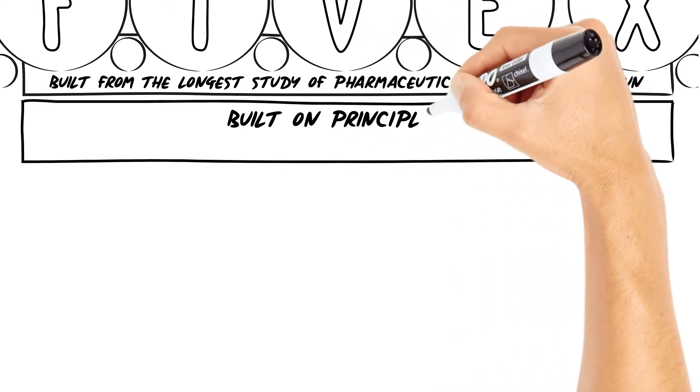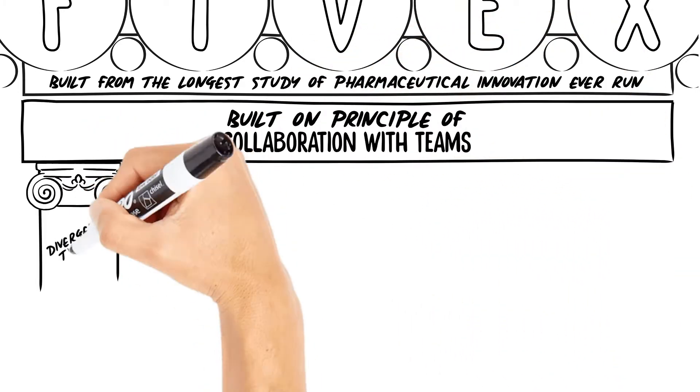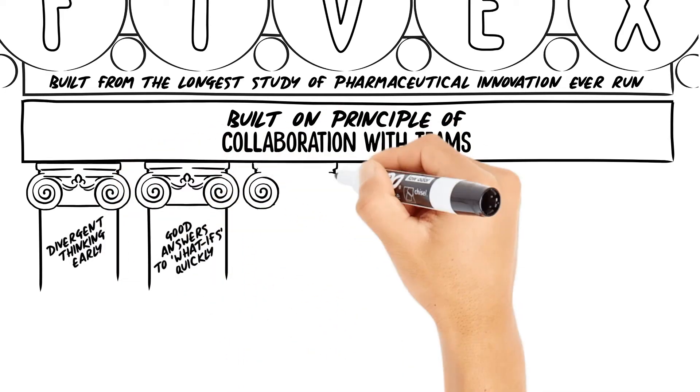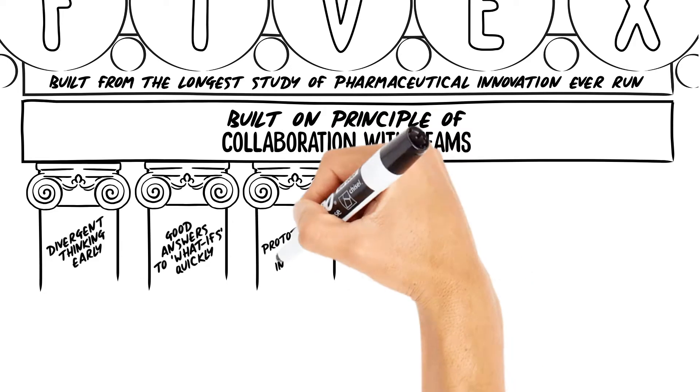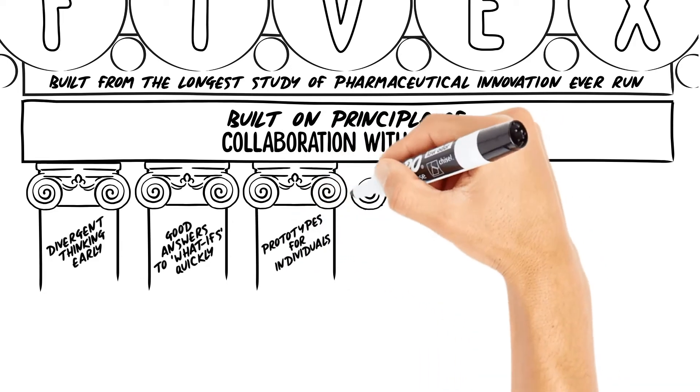5x is built on the principles of collaboration within teams which are divergent thinking early, good answers to what-ifs quickly instead of more detailed answers slowly, and prototypes that allow individuals to bring their own perspectives to improving ideas so we have a diversity of opinions.